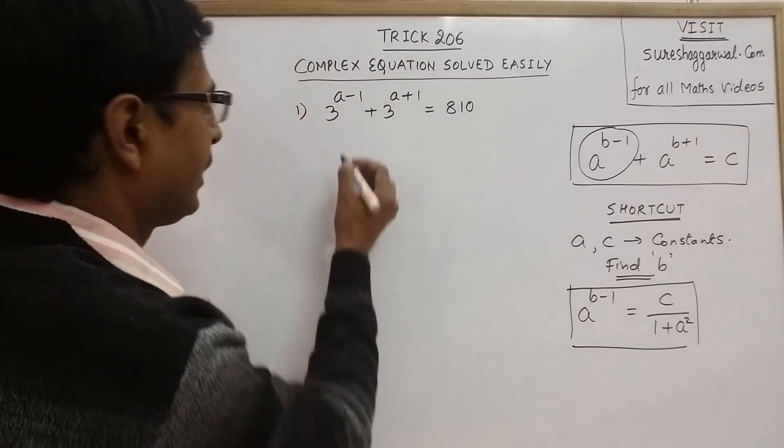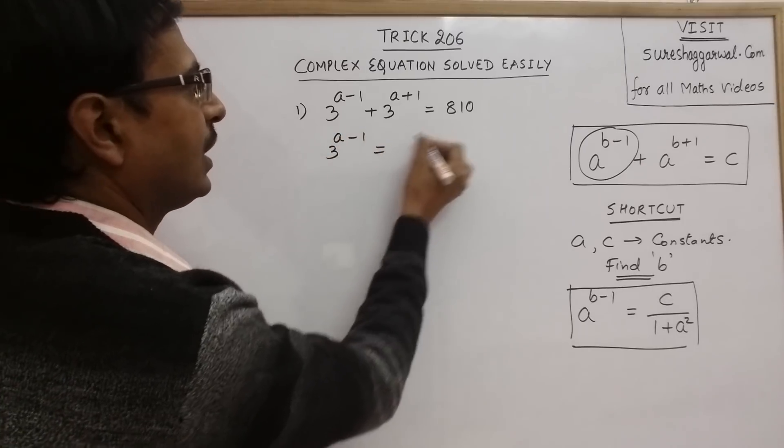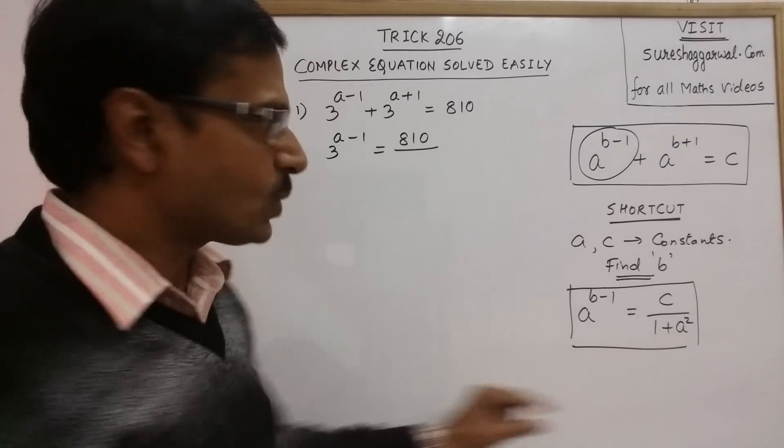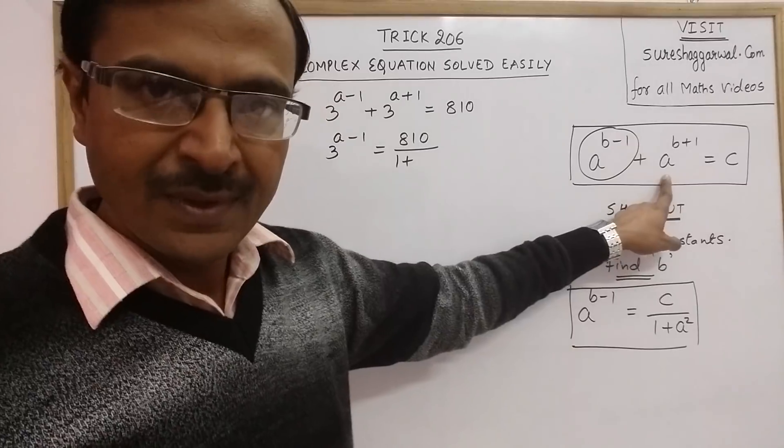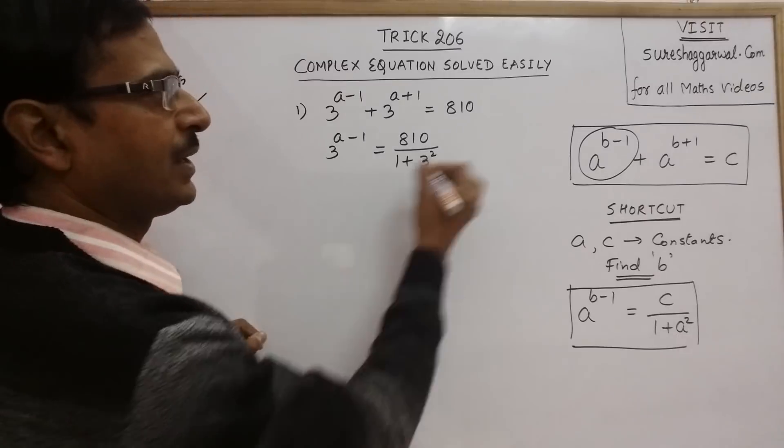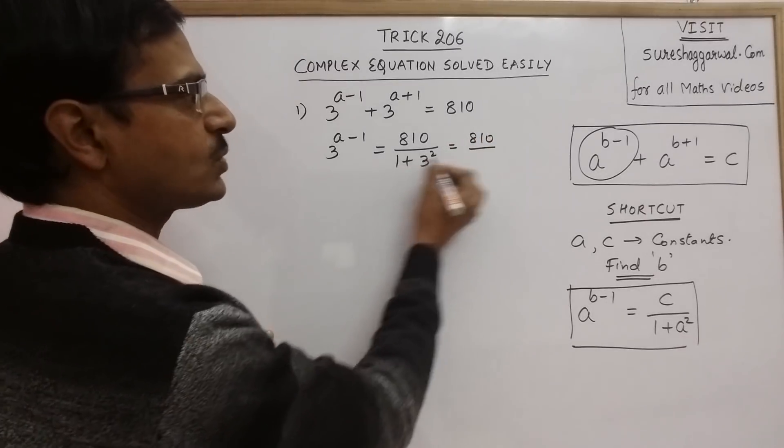Now see here, first term is 3 raise to power a minus 1. RHS is 810 and we have to divide it by 1 plus a square. So, 1 plus a, a was the base. So, here the base is 3. So, divide it by 3 square. So, you see 810 divided by 3 square, 9 plus 1, 10. So, 0 gets cancelled.